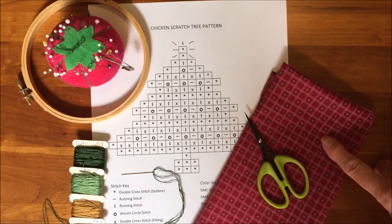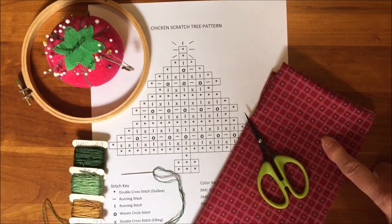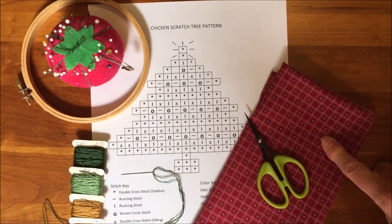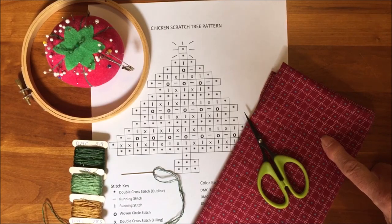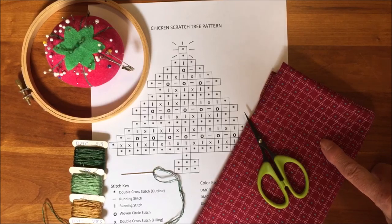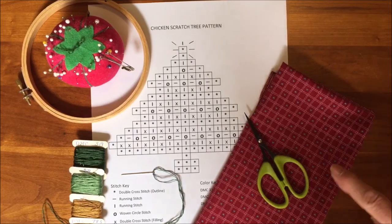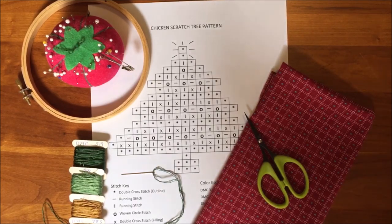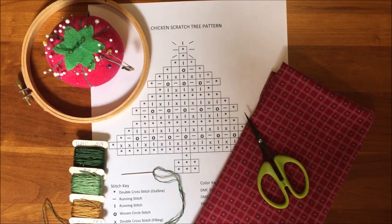Some gingham fabric. Traditionally chicken scratch embroidery was worked on gingham fabric which is a checkered fabric. This makes counting the stitches quite easy. An embroidery hoop, embroidery thread, embroidery needle, scissor, and pins.